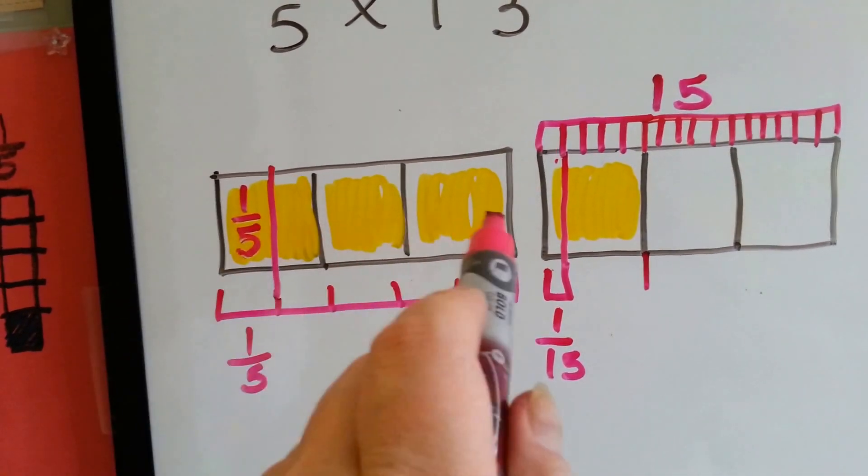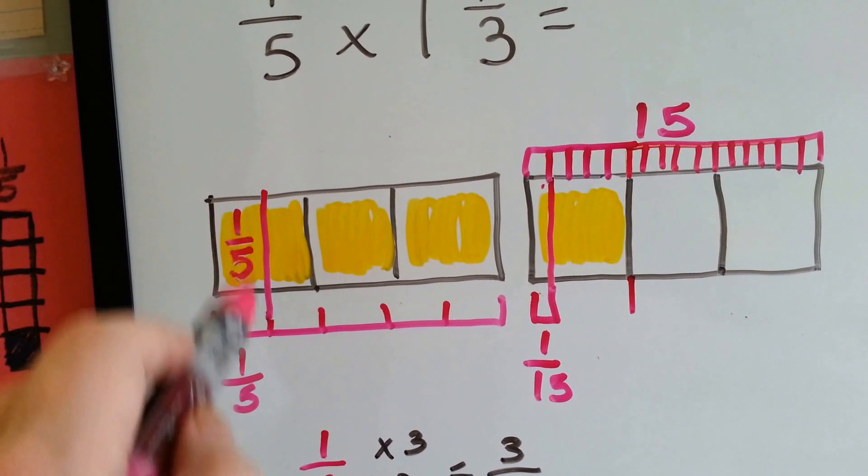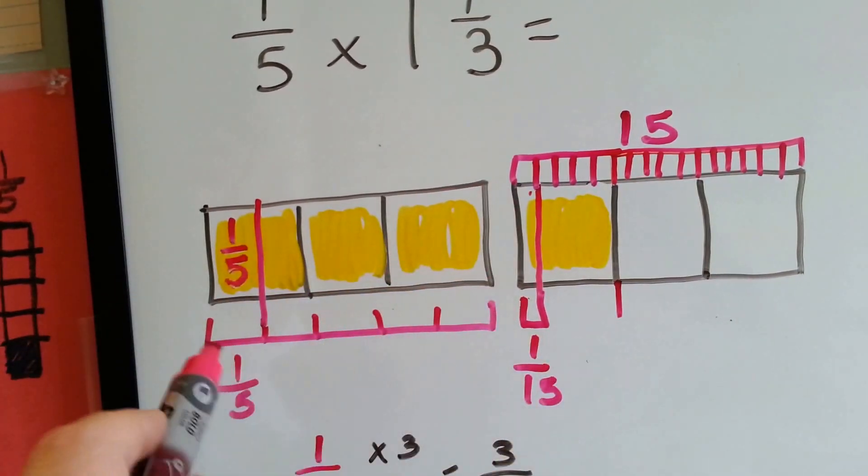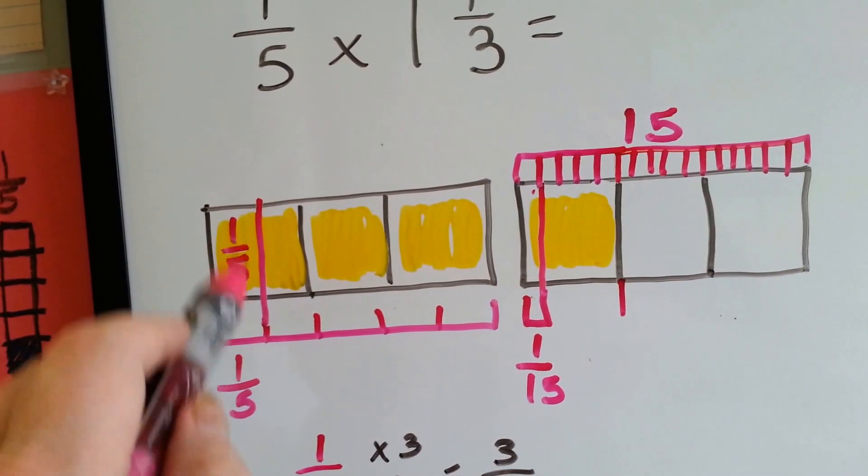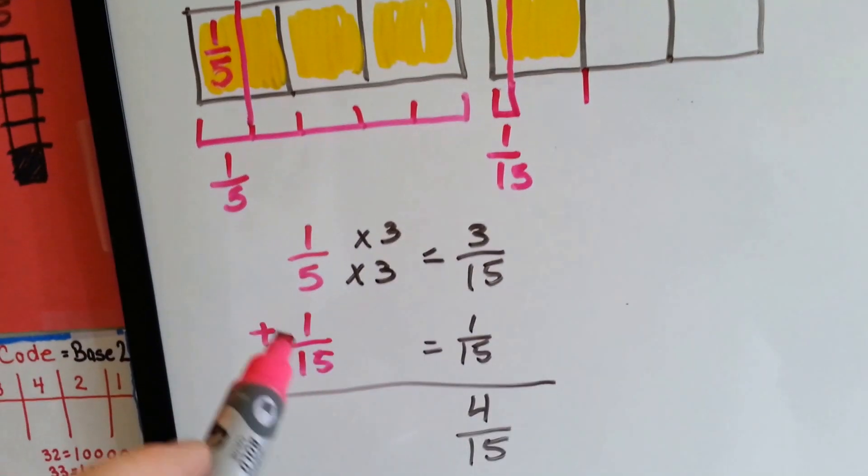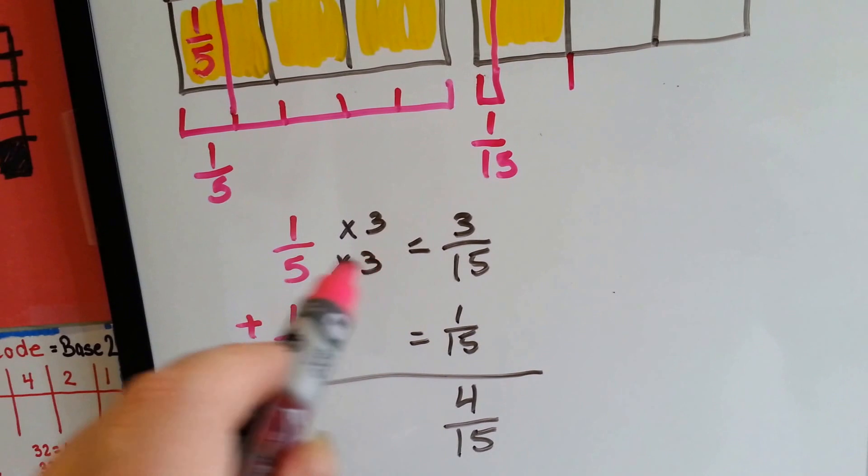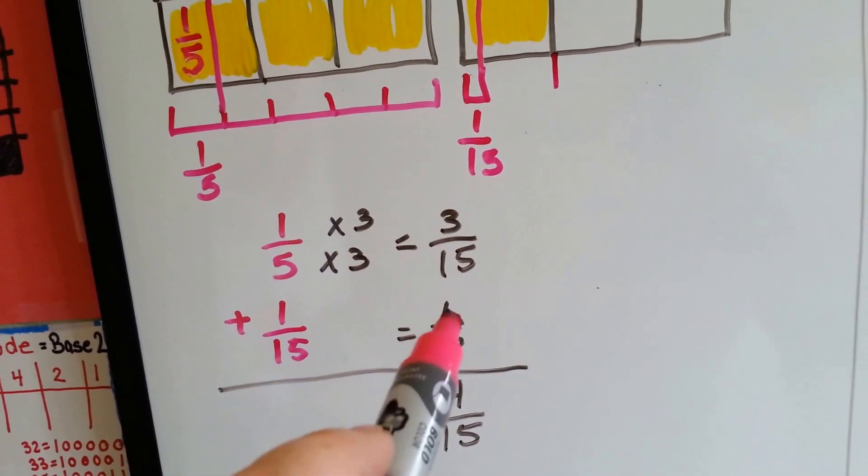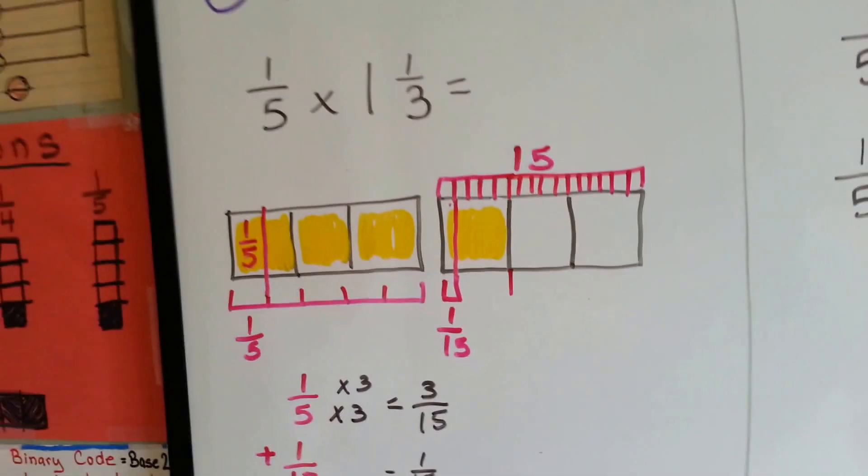Now I need to split this into 5 pieces. So this is 1 fifth right here because if this is 1 whole and I split it into 5 pieces and I take 1 of the 5 pieces, I have 1 fifth. Now I can add 1 fifth and 1 fifteenth. I make a common denominator. This can be multiplied by 3 to meet at 15's house and I get 3 fifteenths plus 1 fifteenths and I get 4 fifteenths. So that's how we could do it using a model.